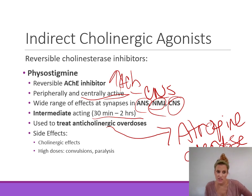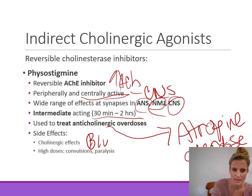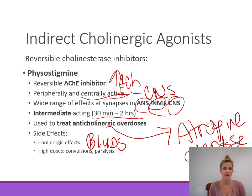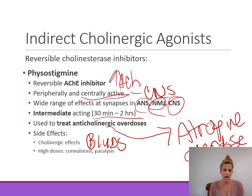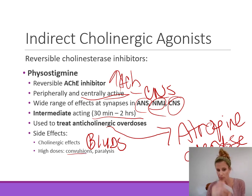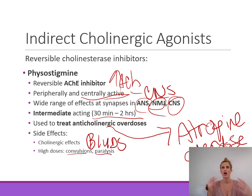Side effects of physostigmine are all cholinergic — contraction of GI smooth muscle, bradycardia, hypotension, miosis, and skeletal muscle twitches. At high doses it can cause convulsions, and it can also cause paralysis due to constant depolarization at the neuromuscular junction.